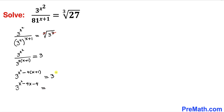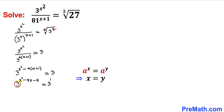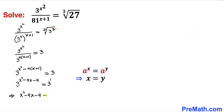On the right-hand side, 3 could be written as 3 to the power 1. Now we can see that our bases on both sides are the same. So therefore we can equate our exponents, as you can see in this basic rule. So therefore we can write x squared minus 4x minus 4 equals 1.